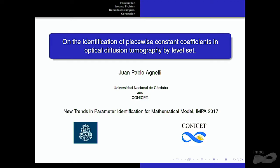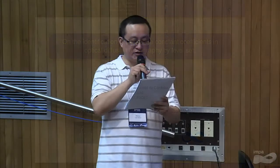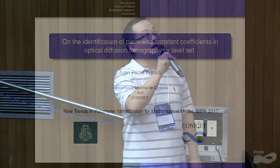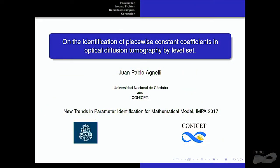The first speaker of this session is Juan Pablo Anile. He got his PhD in 2011 at the University of Nesiodi-Katoba, and since 2015 he is a young researcher at the National Research Council of Argentina. The title of his talk today is 'On the Identification of Piecewise Constant Coefficients in Optical Diffusion Tomography by Level Set'.